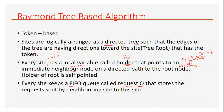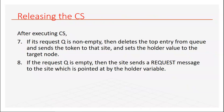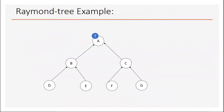So to summarize, the data structures used here are: a directed tree, a holder variable for each node, and a request queue. Now let's look at an example to demonstrate the algorithm. We take a directed tree, and for simplicity, each site is referred to as A, B, C, D, and so on.